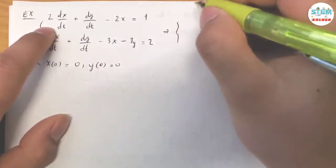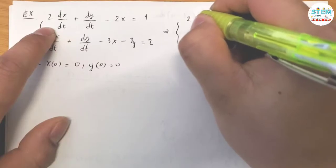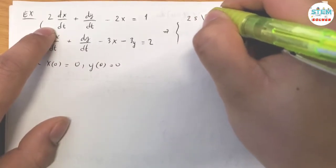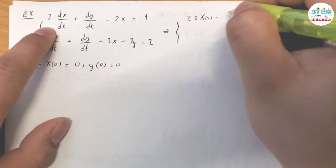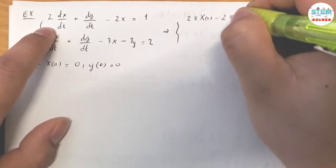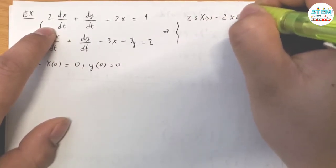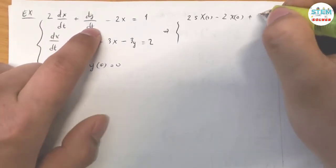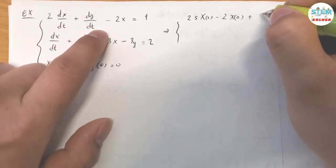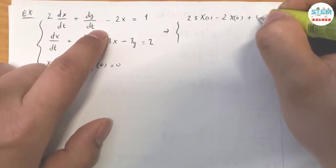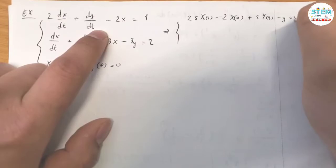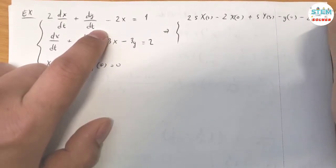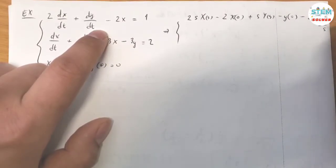For the first equation, applying the Laplace transform gives: 2S·X(S) minus 2·X(0) plus S·Y(S) minus Y(0) minus 2·X(S) equals one over S.